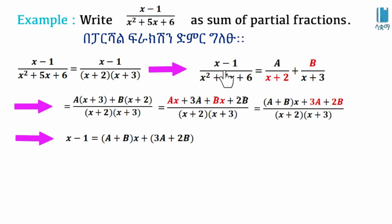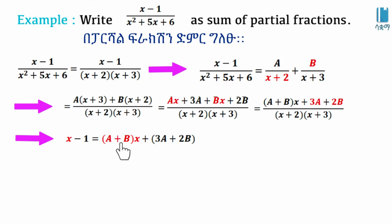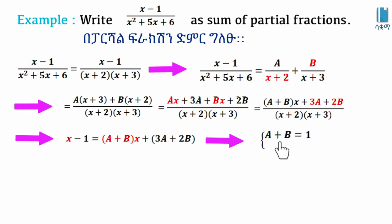Expanding gives x - 1 equals (A + B)x plus (3A + 2B). Matching coefficients: the x coefficient gives A + B = 1, and the constant term gives 3A + 2B = -1.